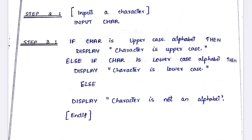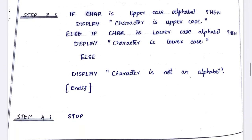The question is very clear: you give one character. If that character is lowercase, display 'lowercase'. Else if it is uppercase, display 'uppercase letter'. Else, it is not a character. If it is uppercase or lowercase you display that; if it's any symbol or number then display 'it is not an alphabet'. That's the logic.